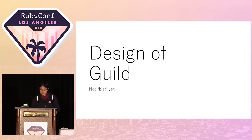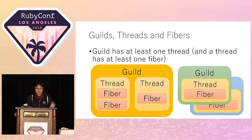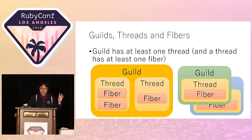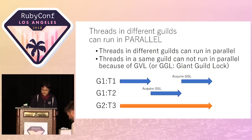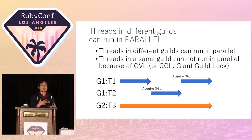Next is design. I'll share the current Guild design and current discussion topics. A Ruby interpreter can manage multiple Guilds. A Guild has at least one thread, and when we run a Ruby interpreter, there is one Guild which runs one thread. Threads in one Guild cannot run in parallel because there is a giant lock in each Guild. However, threads belonging to different Guilds can run in parallel. So if we make multiple Guilds, we can achieve parallel programming in Ruby.